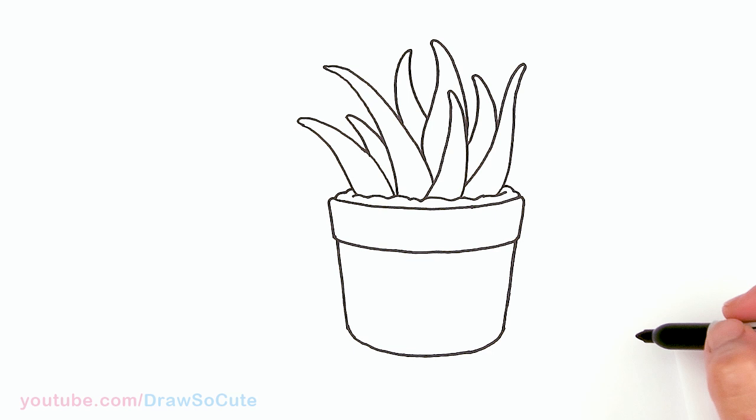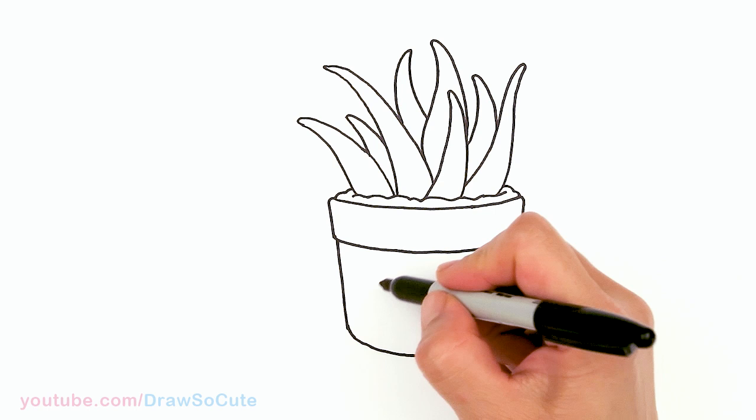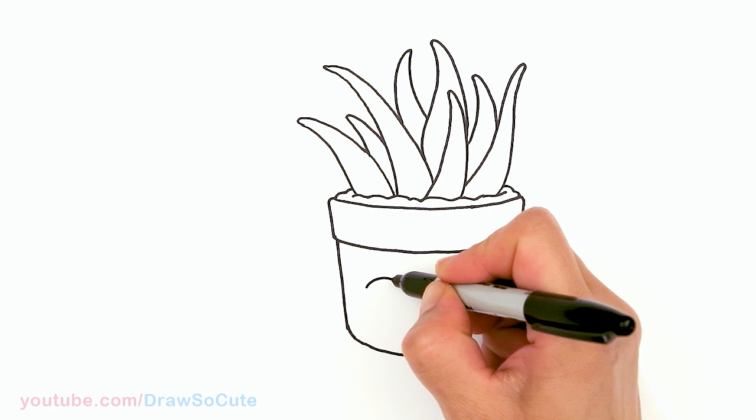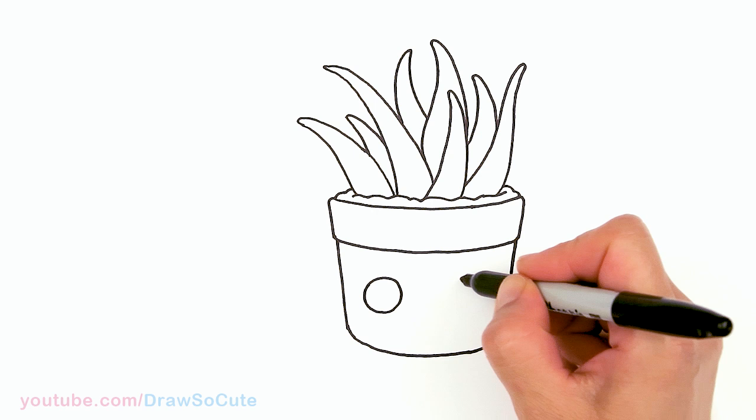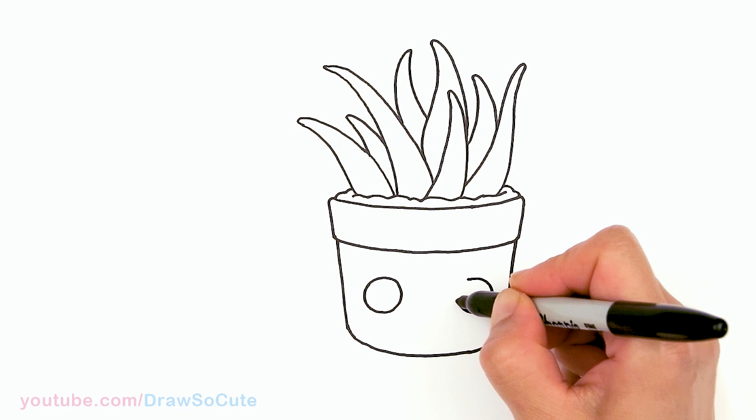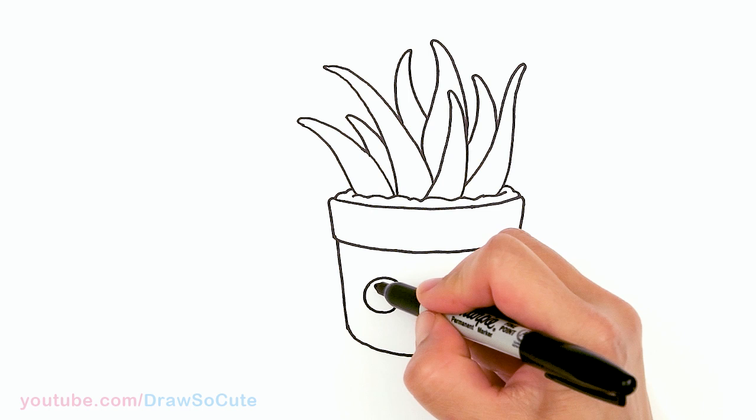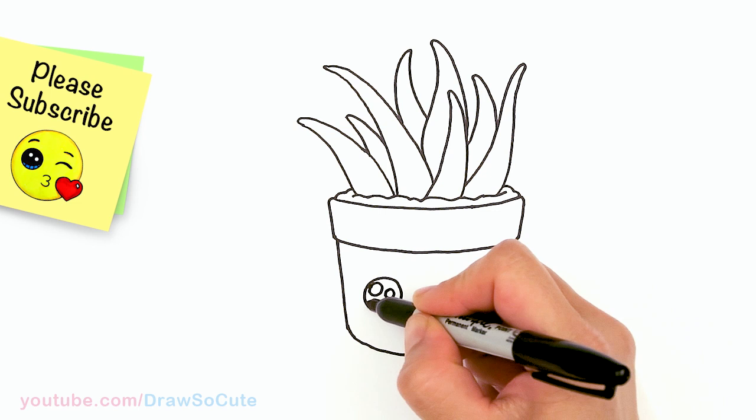So then from there, let's bring this aloe to life, this pot here. I'm going to come right here at the bottom here, draw a big circle for the eyes. And same thing right across. And I'm going to make them Draw So Cute eyes. So two small circles inside for highlights and a curved line at the bottom.